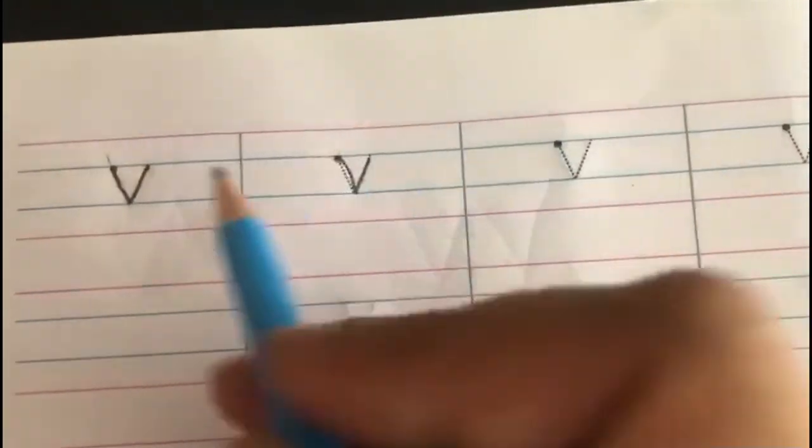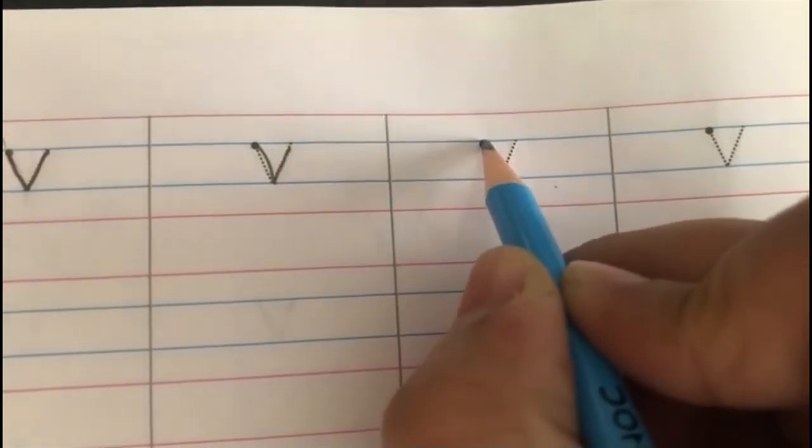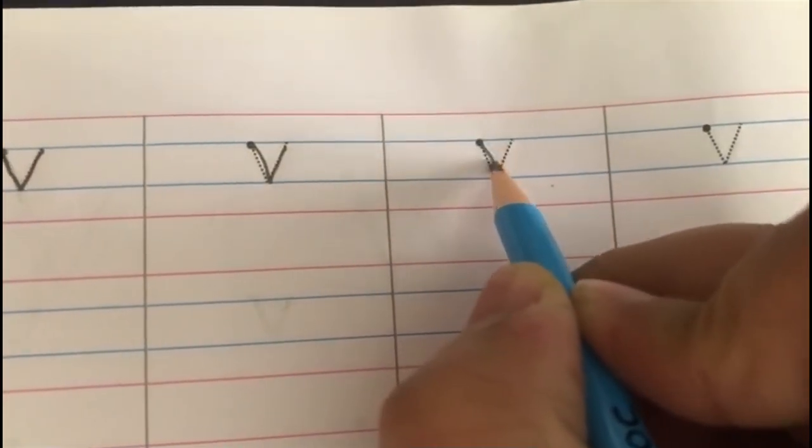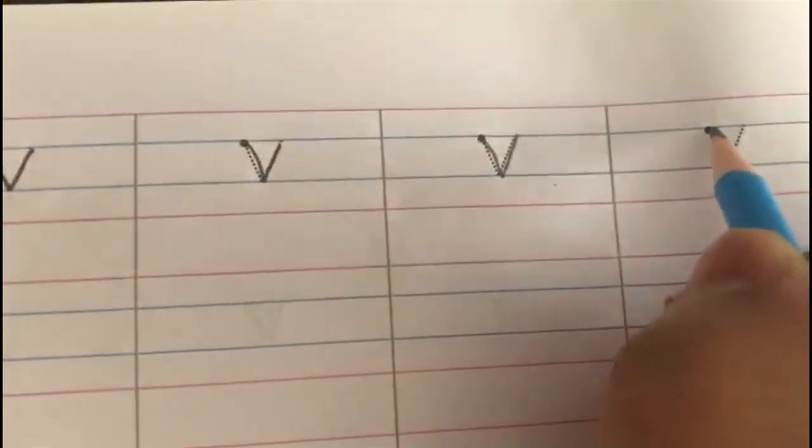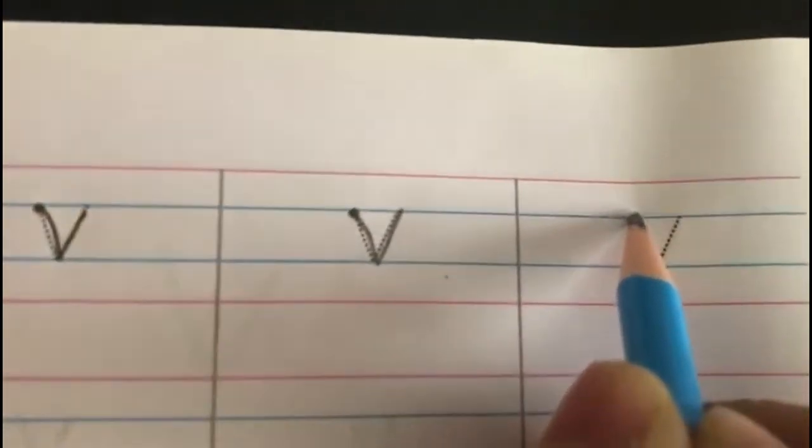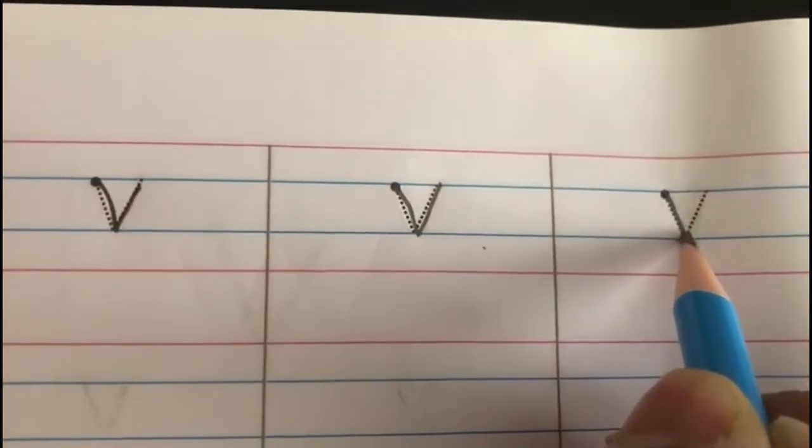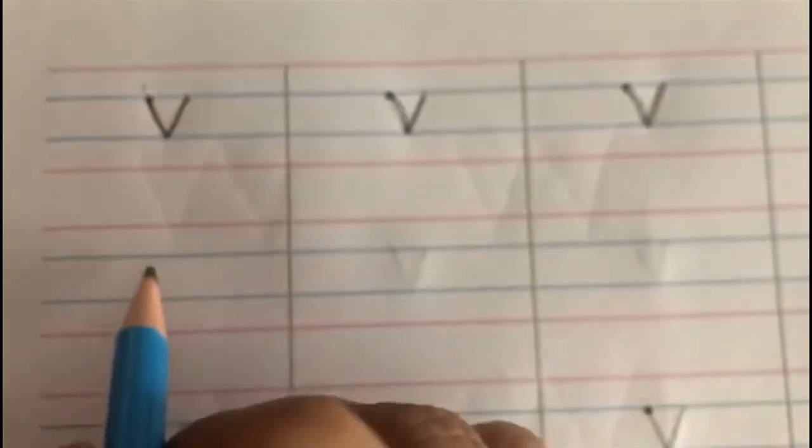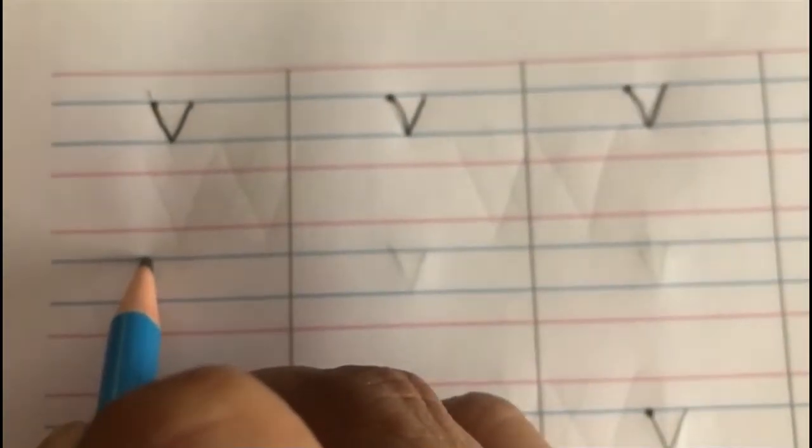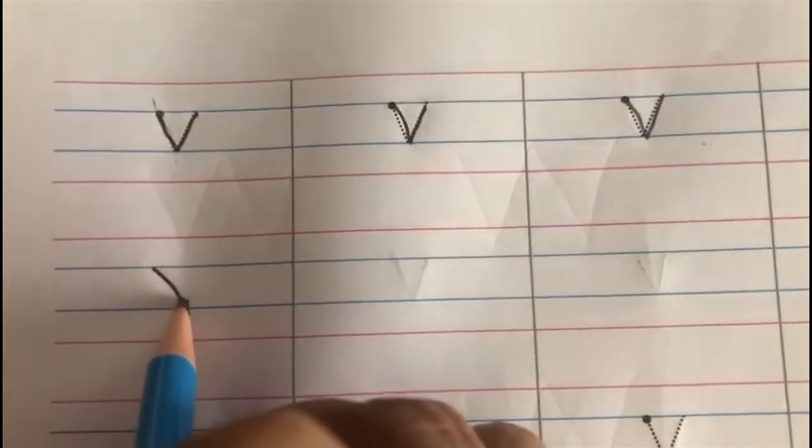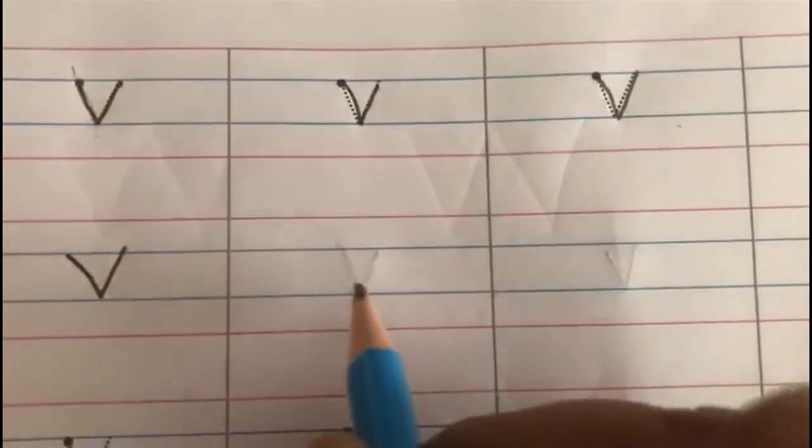Again we'll trace a line and then write it independently. Come on, let's begin. We're going to start from the first blue line, slanting line down, slanting line up. Now let's write independently. Start from the first blue line, slanting line down, slanting line up. V.